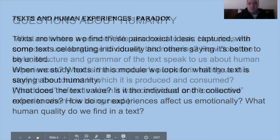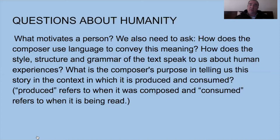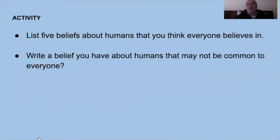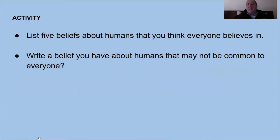Some further questions we need to consider: what motivates a person? How does the composer use language to convey meaning? How does the style, structure and grammar of the text speak to us about human experiences? What is the composer's purpose in telling us this story in the context in which it is produced and consumed? Produced refers to when it was composed by the artist, and consumed refers to when it is being read and what we get from that particular text.